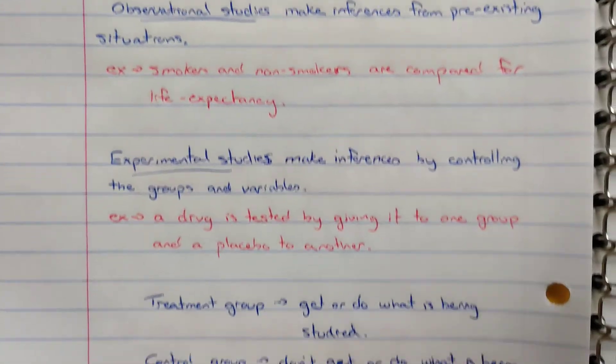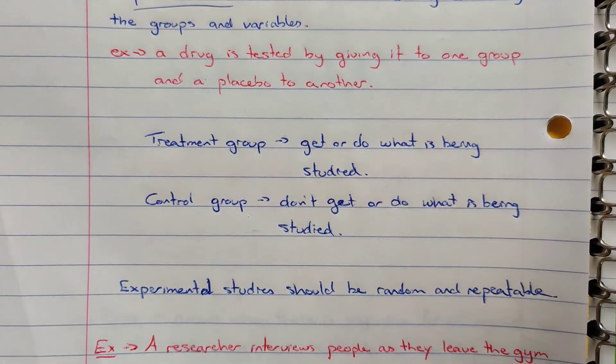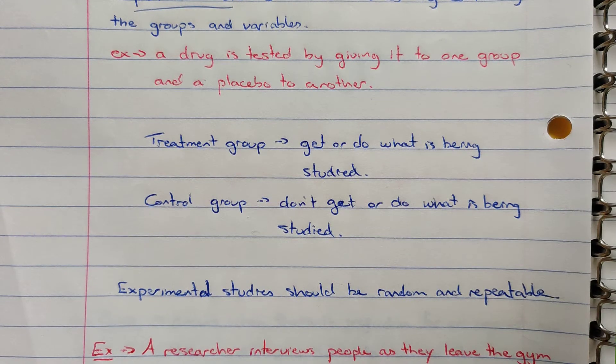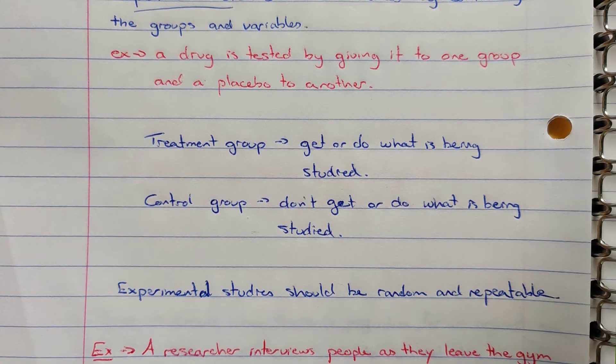When we're doing an experimental study we often have what are called the treatment group, which is the people that get the study happening to them, so in this case giving them a drug, and then the control group which don't get the study per se, but in this case could be the guys getting the placebo. So we're controlling what's going on, who gets the drug, who doesn't, and we're using that to study them.